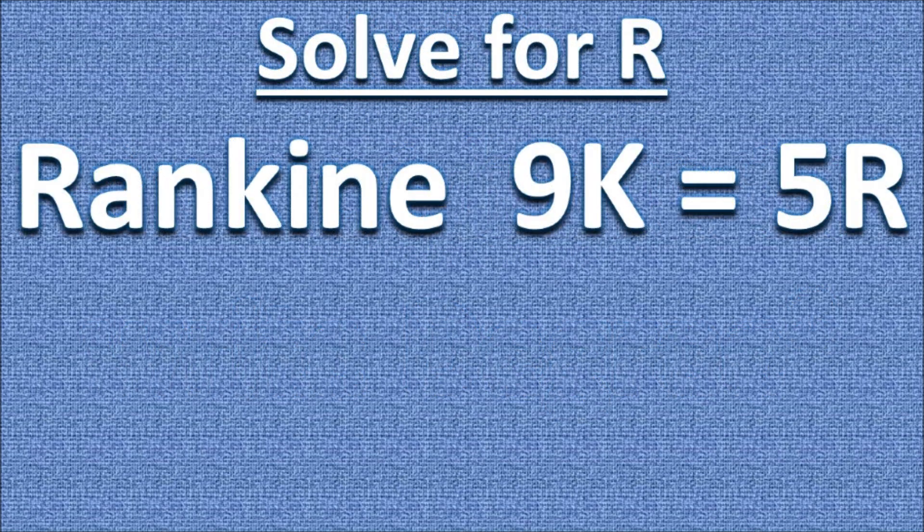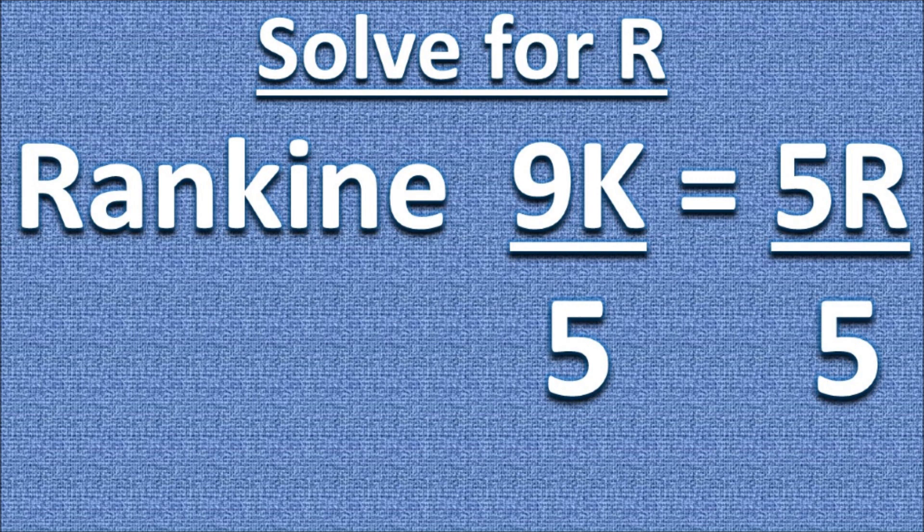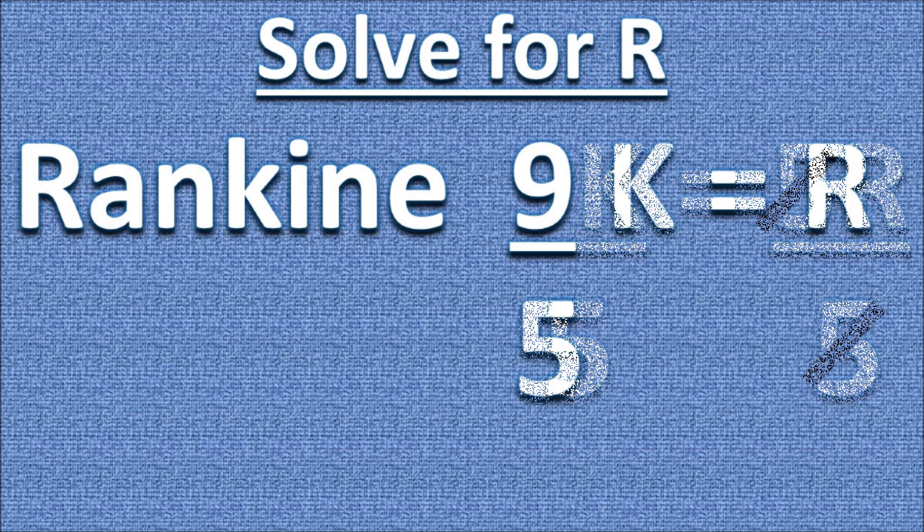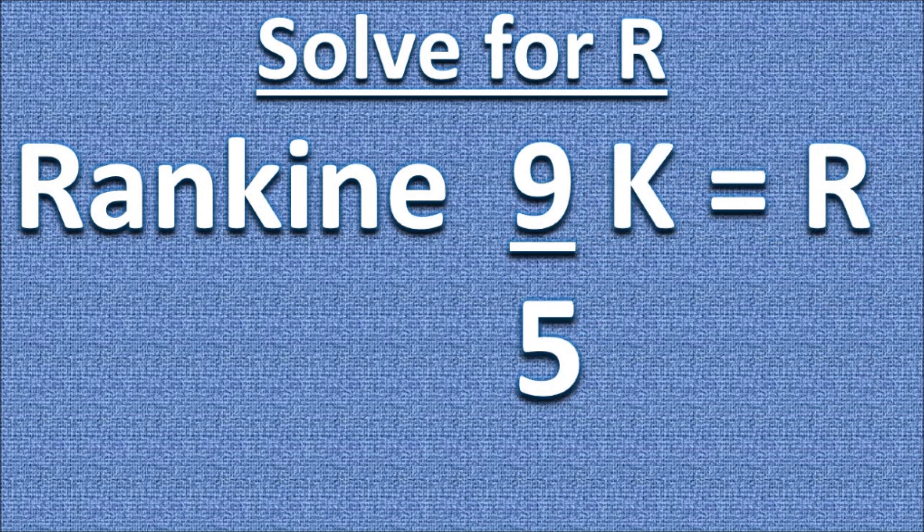Let's go back to our formula and solve for R this time. We divide by 5 on both sides of the equation to get R by itself. The 5's cancel out on the right side of the equation. So here's our formula for Rankine.